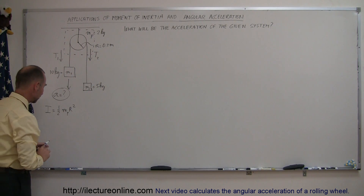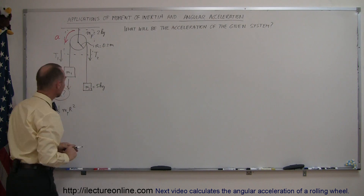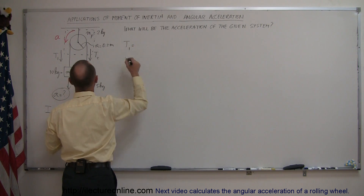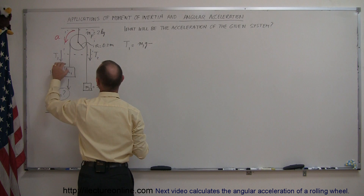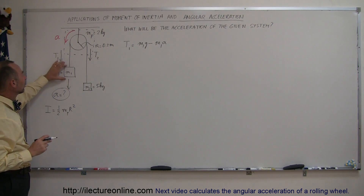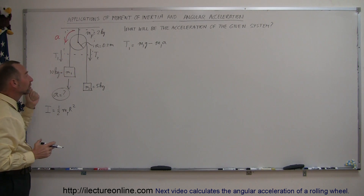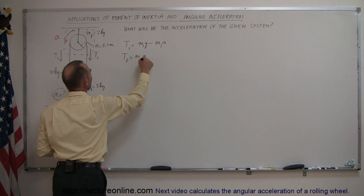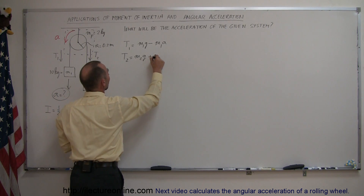Viewed by the masses, we can assume that the acceleration will be in this direction. Now, what is tension one and tension two? Tension one can be found by saying it is equal to the weight of the object, M1g, minus the force required to accelerate the object downward, M1a — so T1 = M1g − M1a, according to Newton's laws. We can then say that T2 is equal to M2g plus the force required to accelerate upward against gravity, so T2 = M2g + M2a.